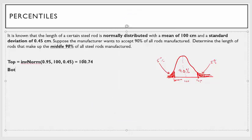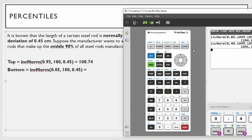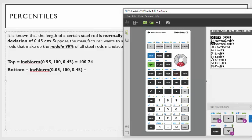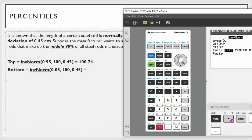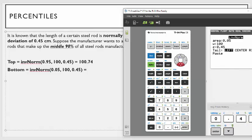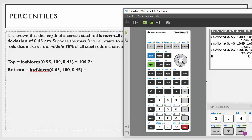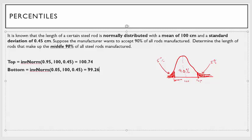Now let's find the bottom value. The bottom value is straightforward — you want 5% of rods below you, so that's the 5th percentile. On the TI-84: second function dist, inverse norm. I want the 5th percentile, so 0.05. The mean is 100, the standard deviation is 0.45. Go down to paste and it's 99.26 when rounded. So the middle 90% of rods have a length between 99.26 centimeters and 100.74 centimeters.